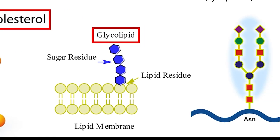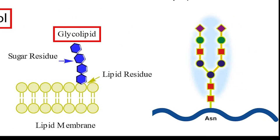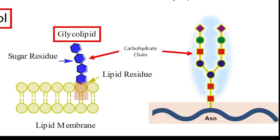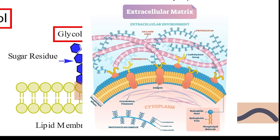In addition to cholesterol, cells often add carbohydrate chains to either proteins or lipids. These are called glycolipids if the chain is added to a phospholipid, and glycoproteins if the chain is added to a protein. These molecules have an enormous number of functions for cells. In general, they are used in cell-to-cell communication, connecting to the extracellular matrix, and many other tasks that proteins or lipids are not suited for on their own.